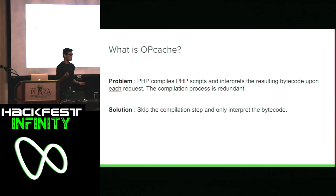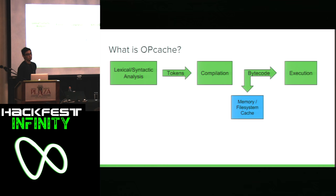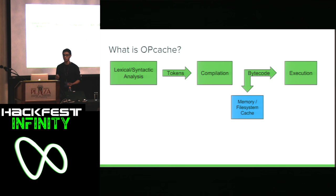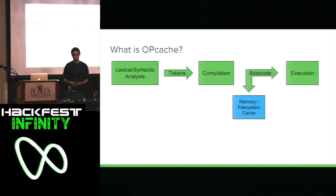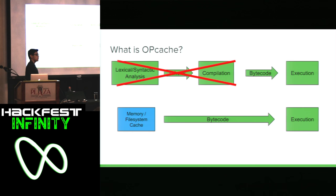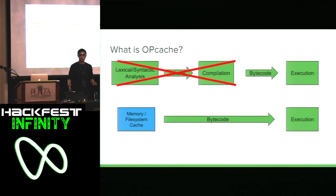Opcache removes the redundant steps in the compilation process. The very first time a guest visits one of your web pages, it goes through the normal process: PHP breaks it into tokens, tokens get compiled into bytecode, and the bytecode gets executed. But this time, the bytecode is also stored in a cache — either in memory or in a file system cache. The second time a guest visits your web page, PHP sees the cached bytecode and instead of going through the first two steps, it just reads from that cache directly and executes it. So your three-step process becomes a two-step process, and that's where you get your performance gains.